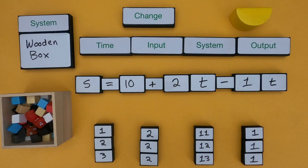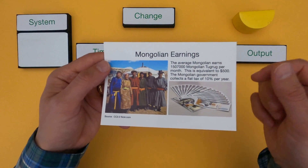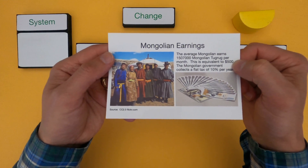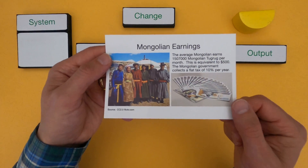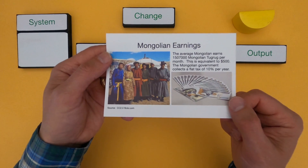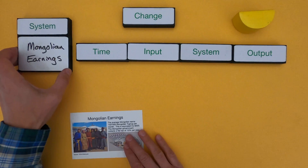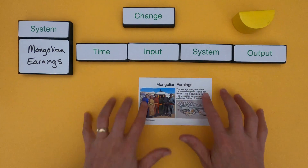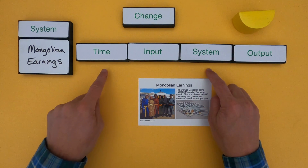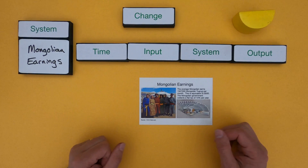Now I'm going to set up one for you to try. For this next example, I've got Mongolian earnings. An average person in Mongolia makes $500 a month, so they make around $6,000 a year. They also have a flat tax rate in Mongolia, so at the end of the year they take 10% of your earnings, which is $600 in taxes. We can think of Mongolian earnings as the system. Fill out a data table like I was just doing — what comes into the system in year 1, year 2, year 3 — and then try to figure out a mathematical model. Pause the video, try to do it on your own, then come back and we'll compare.